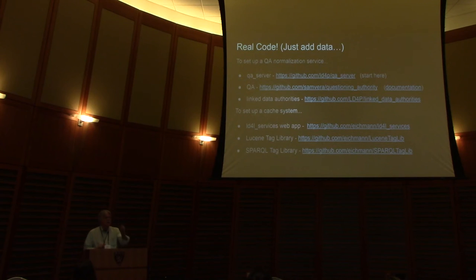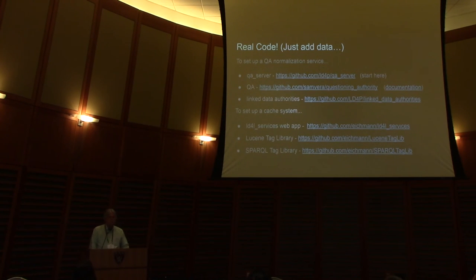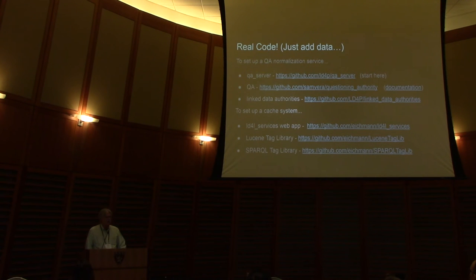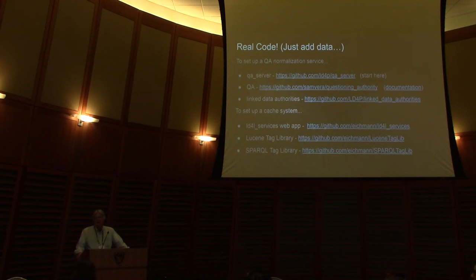There was a question about source code access. The first block shows the QA GitHub repositories. In the bottom group, the top one is the web app, and two supporting tag libraries are available. The tag library, if you want to pick it up and use it against an arbitrary triple store, is a very nice standalone collection of all the queries. Five minutes for questions.